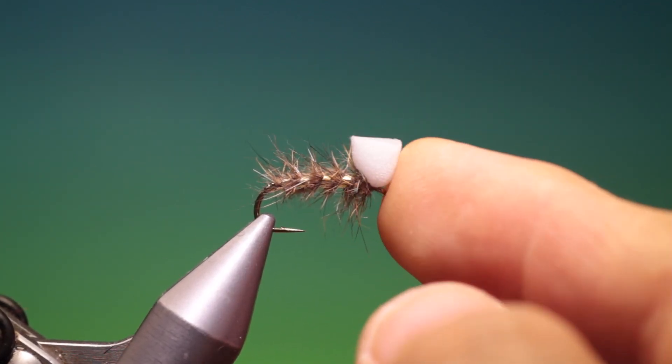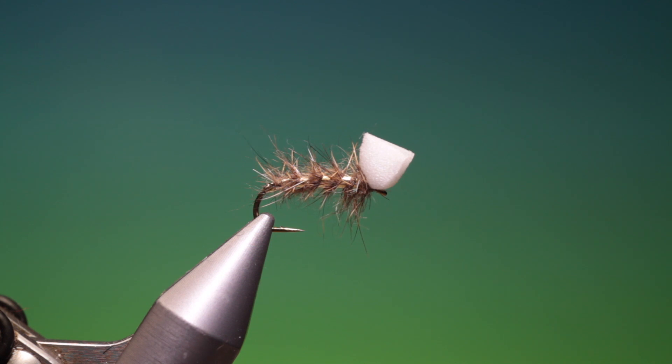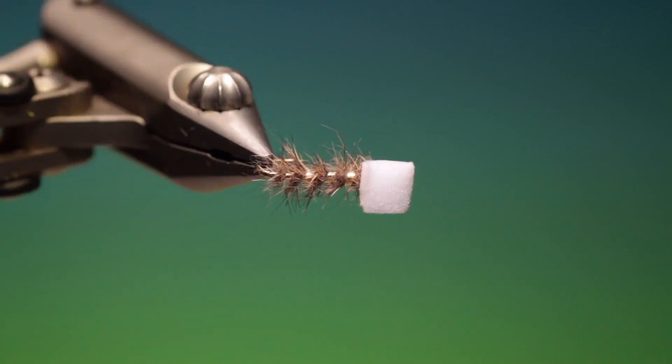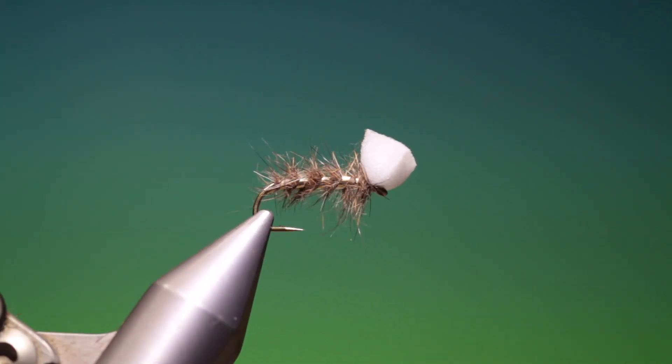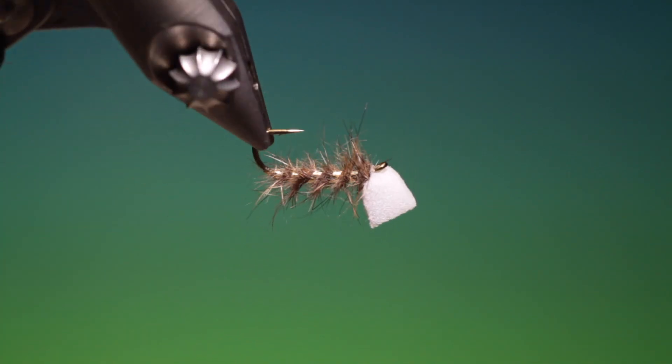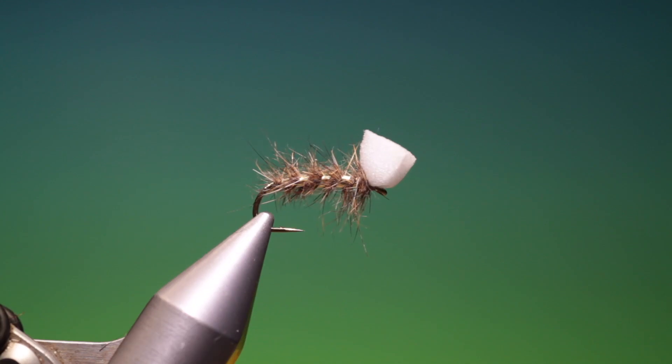Now, what you would do is fish this as a top fly, and then have a dropper, perhaps off this, further down the leader. But it is a cracking pattern. Nine times out of ten, the fish will pick this one up. If you enjoy the videos, please like, subscribe and share. And thanks for watching.